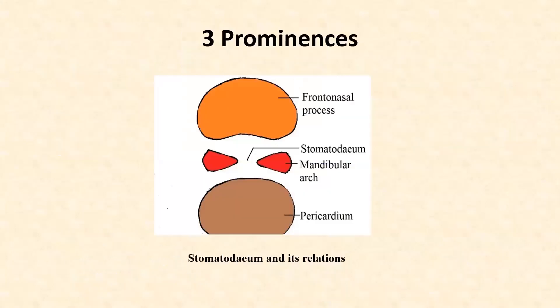Three swellings or prominences develop around the future mouth or stomatodium. These are the frontonasal process shown in orange here, and the right and left mandibular arches shown in red here. These swellings develop in relation to the future mouth or stomatodium.